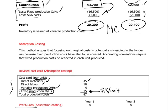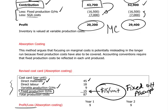We're going to examine the profit and loss statement according to the absorption costing system. Last time we determined how the $15 per unit of fixed production overheads was determined — that was known as the fixed overhead absorption rate.